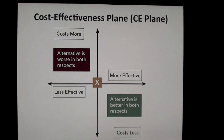When we have the situation of the south-east quadrant, where something is actually more effective and costs less, that's also a very easy decision rule. When we find alternatives compared to standard of care that are more effective and cost less, we should take them up into practice in order to release more resources back into the system and get more efficacy.